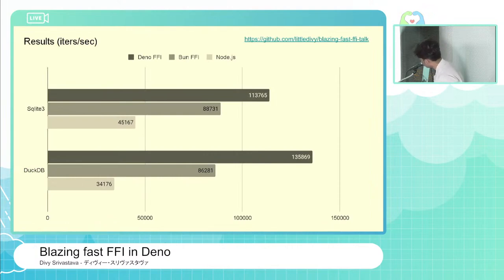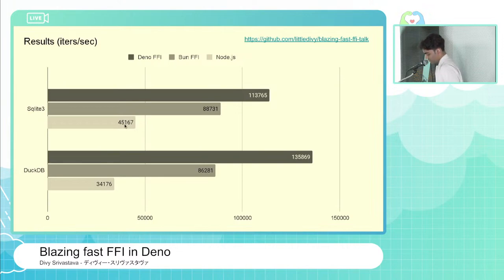Everyone likes some charts, so here are two benchmarks — one is SQLite3 and one is DuckDB. The dark one is Deno FFI compared against Bun FFI, and the other one is compared against a Node.js module. Node does not have FFI, so we're using whatever the most popular library is — I think it's using better-sqlite3 here, and here it is using DuckDB. As you can see, it's quite fast. Libraries like SQLite3 show really nice performance compared to even directly using C — it has on-par performance.